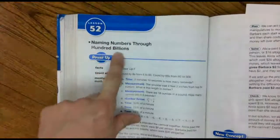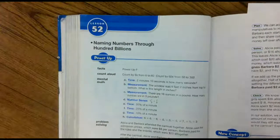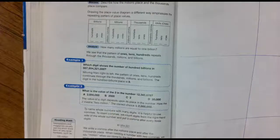All right class, we are on lesson 52. We're going to name numbers through the hundred billions. Now, Big Mac the Knight helps me remember this.